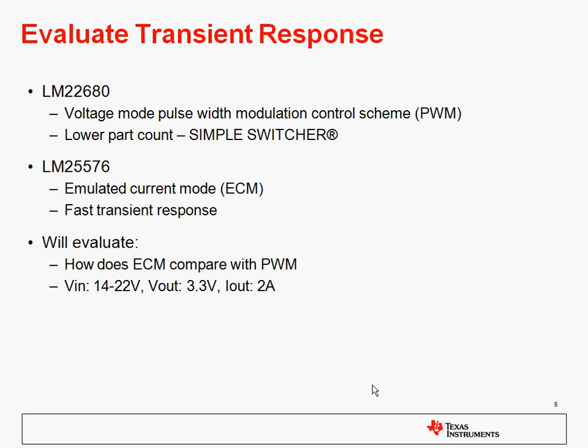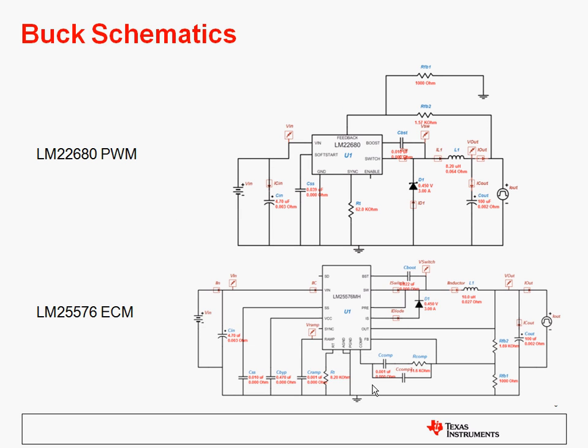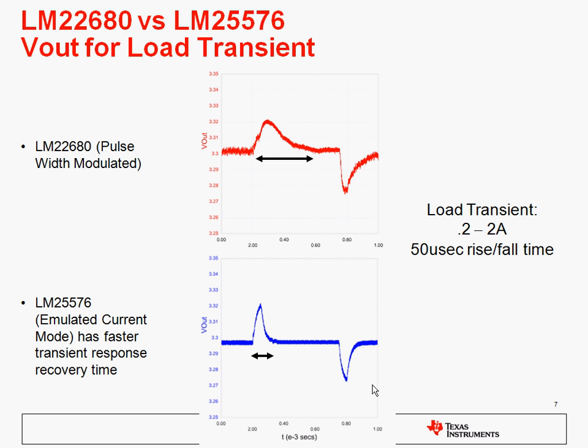Our design criteria is going to be 14 to 22 volts in, 3.3 out at 2 amps. These are the two schematics showing the differences between the two control schemes. They're both integrated switch parts.